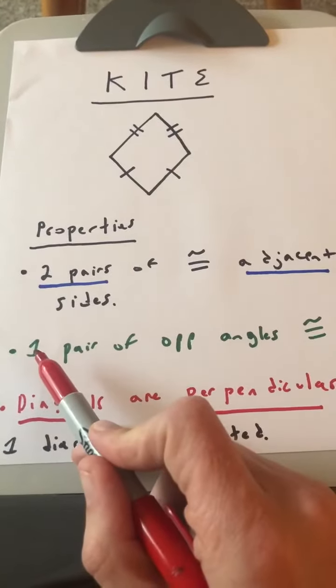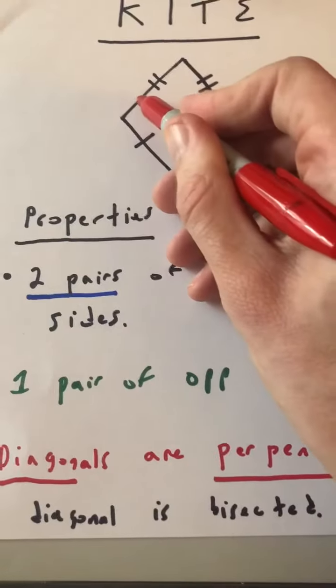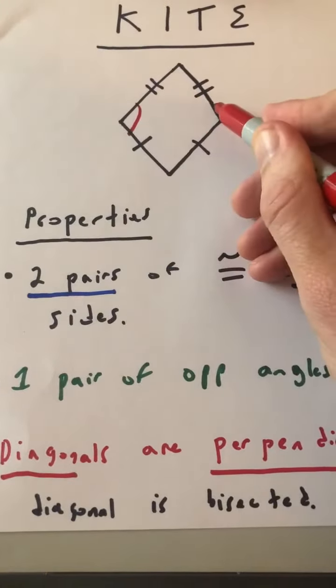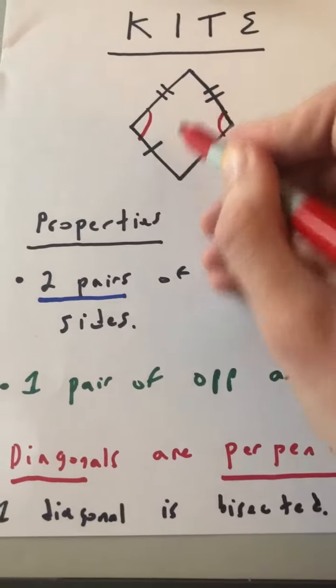Another property of a kite is that it has one pair of opposite angles that are congruent. And in the kite here, it would be this one and that one. Those would be congruent. These two angles would not be congruent here.